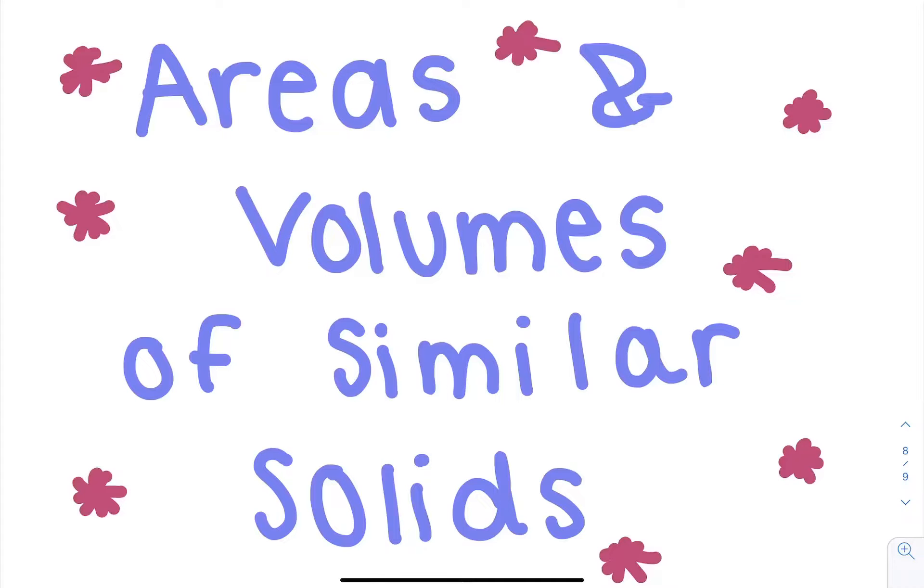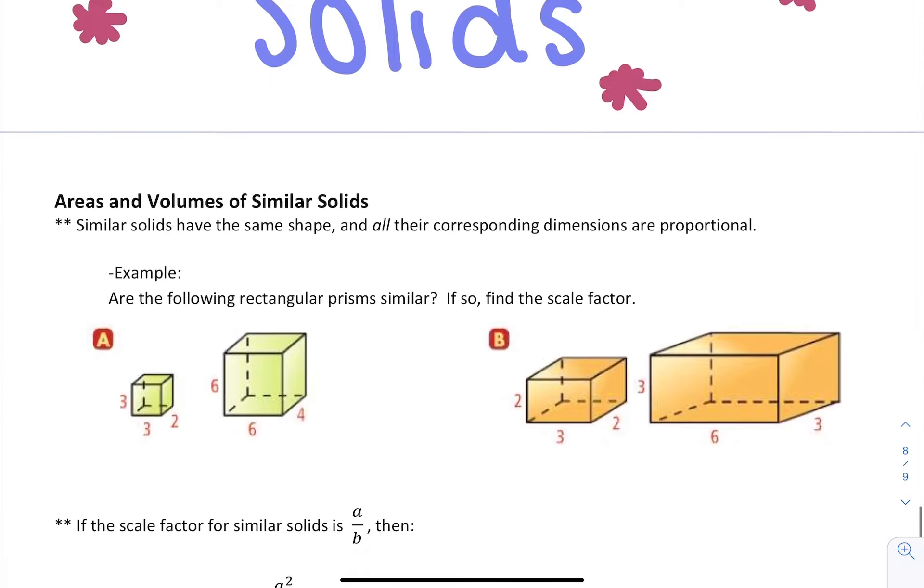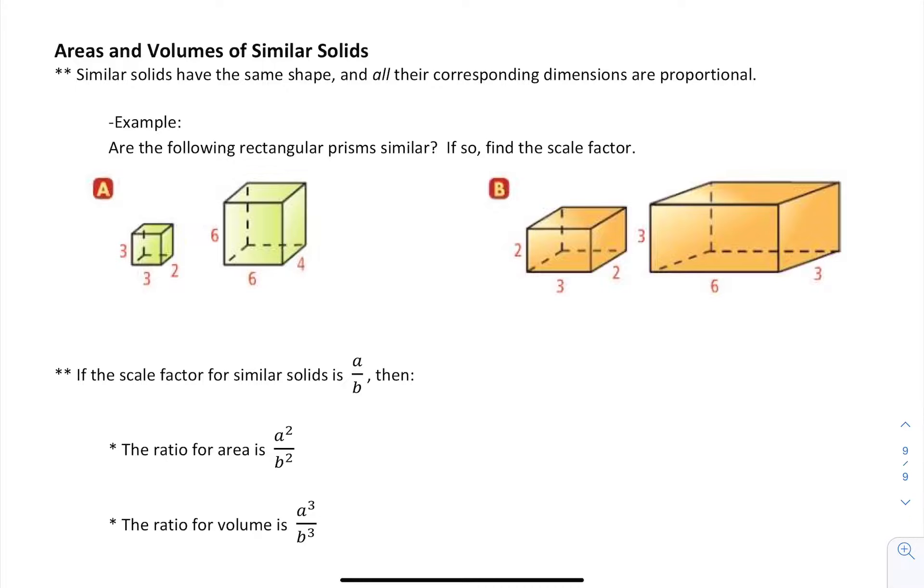In this video, we're going to learn how to compare the areas and volumes of similar solids. If solids are similar, they have the same shape, and all of their corresponding dimensions are proportional.